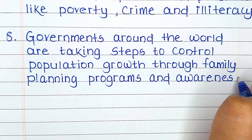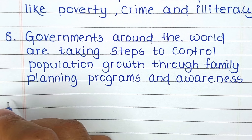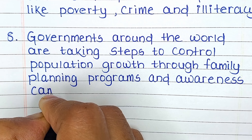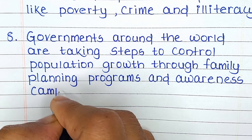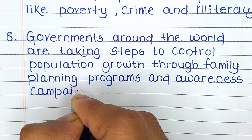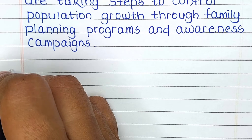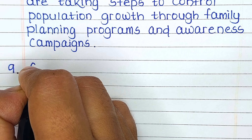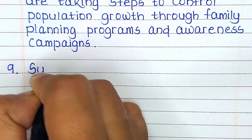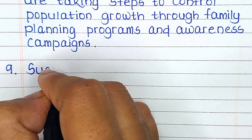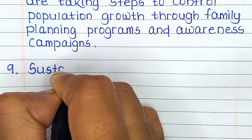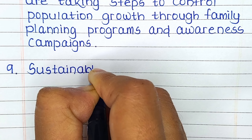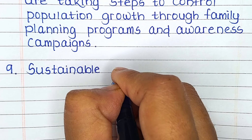Eighth line: Governments around the world are taking steps to control population growth through family planning programs and awareness campaigns.